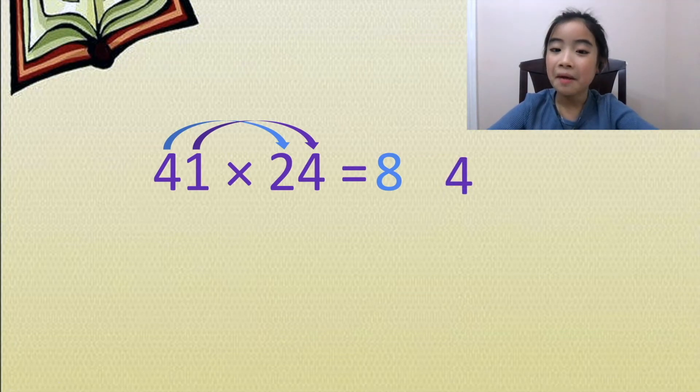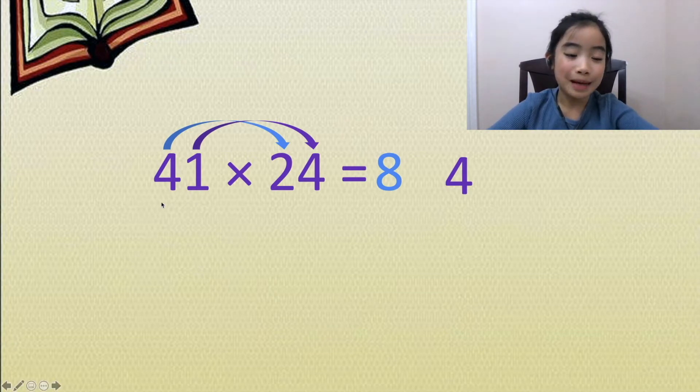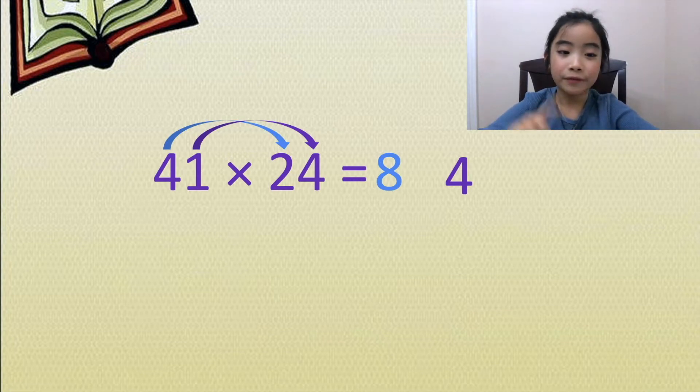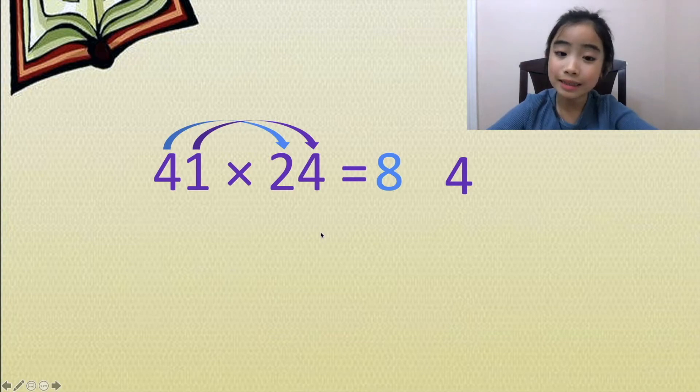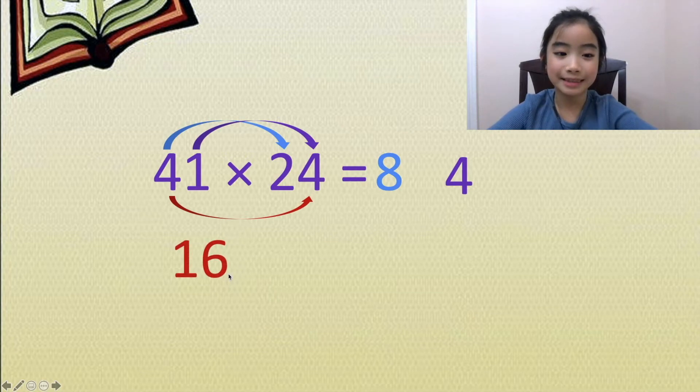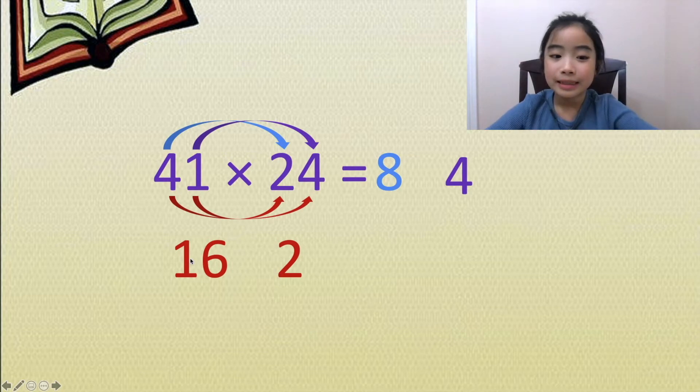Thirdly, let's figure out the number that goes between 8 and 4. Let's multiply the tens digit of the first number to the ones digit of the second number. We have 4 times 4 equals 16. Lastly, let's multiply the ones digit of the first number to the tens digit of the second number. We have 1 times 2 equals 2. Now let's add it up. 16 plus 2 equals 18.